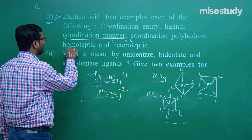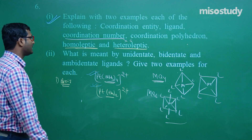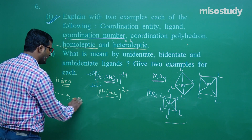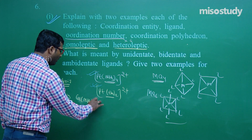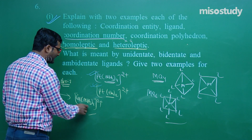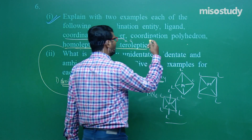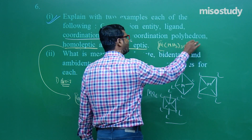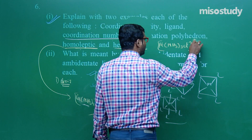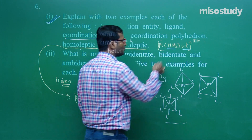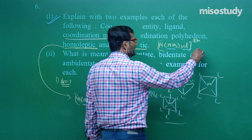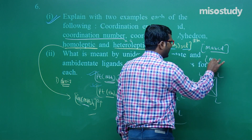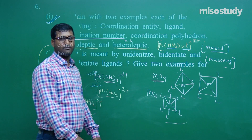Homoleptic and heteroleptic complexes: homoleptic complexes have only one type of ligand, like [Cu(NH3)4]^2+. Heteroleptic complexes have more than one type of ligand, like [Pt(NH3)3Cl]^+. If I write MABCD or MABCDEF — these are examples of heteroleptic complexes.